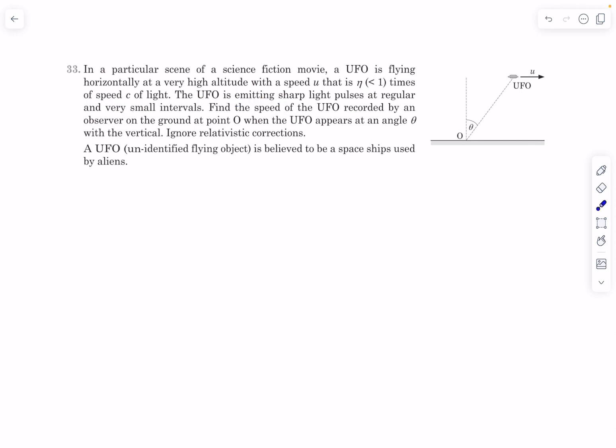The UFO is emitting sharp light pulses at regular and very small intervals. It's almost as if you can consider this as a blink—a blue pulse appeared and immediately disappeared. This is how the pulses are appearing and reappearing.